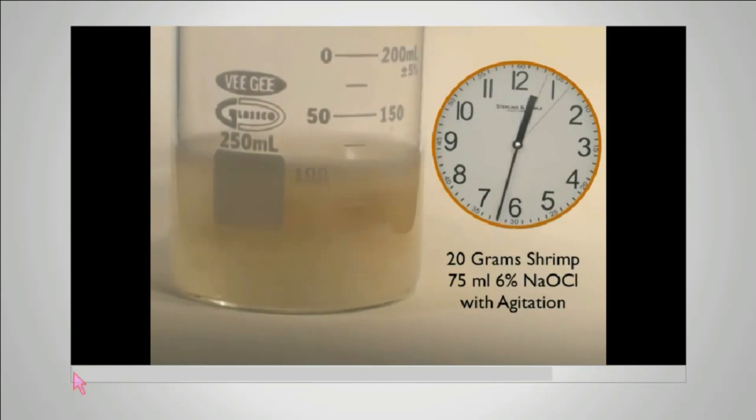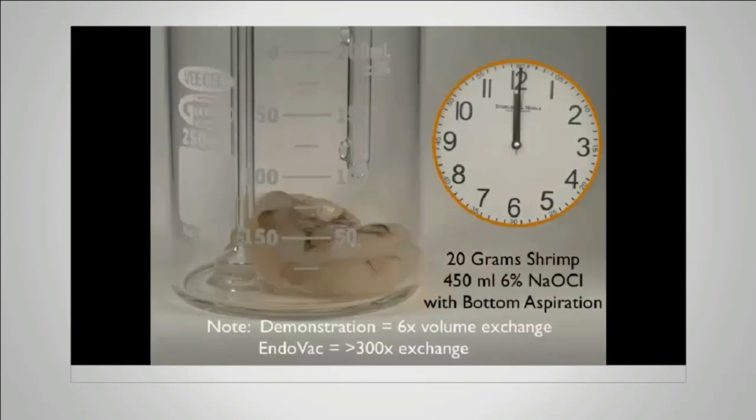The effectiveness of the solution gets used up. So at the end of a full 45 minutes using passive ultrasonic irrigation, you're going to see that about 14 grams of shrimp were hydrolyzed, and about 6 grams of shrimp were not hydrolyzed.